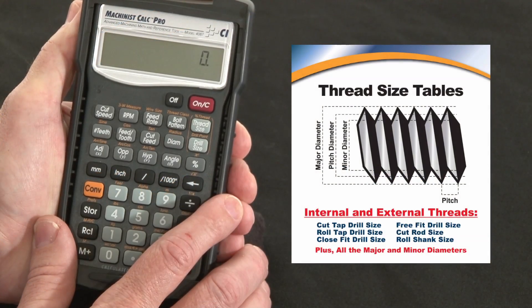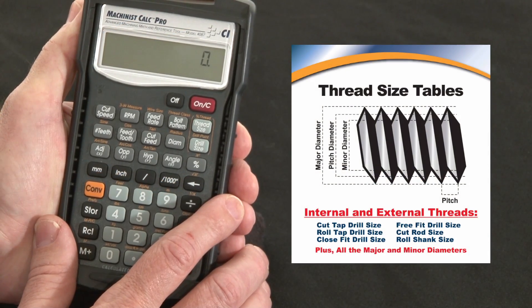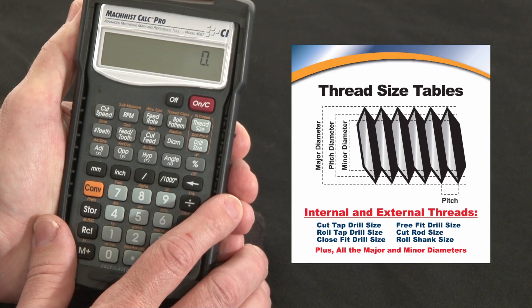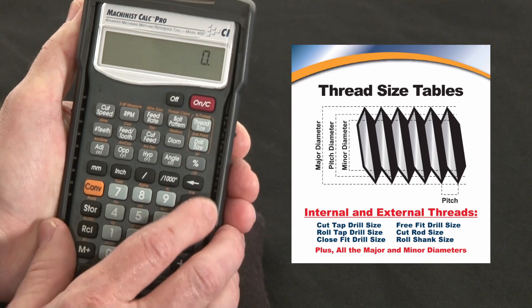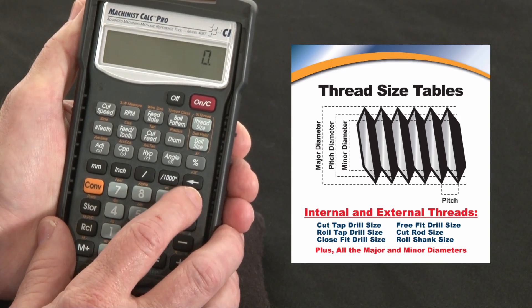Now let me show you the thread size key here on the Machinist Calc Pro. This feature is going to save you hours of tedious thread table lookups. It's got more thread data built into it than what you'll find in the Machinery Handbook.